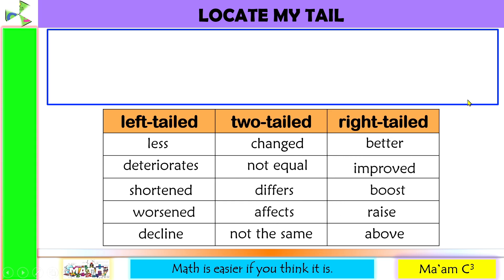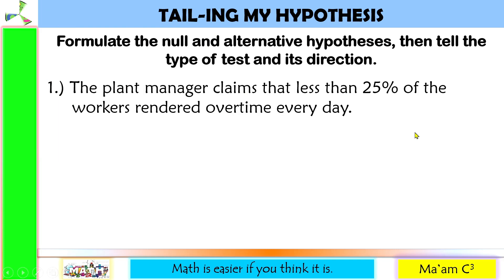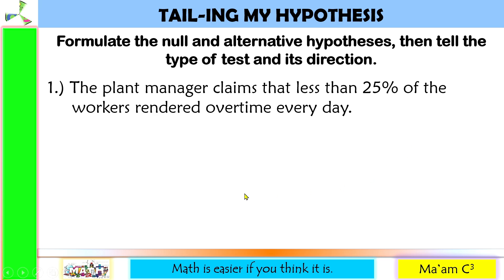Now that you have been reviewed with the words associated with left-tailed, two-tailed, and right-tailed test, let's have another activity: Tailing My Hypothesis. Formulate the null and alternative hypothesis, then tell the type of test and its direction. Number one: